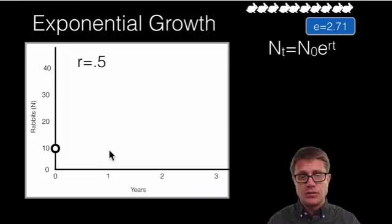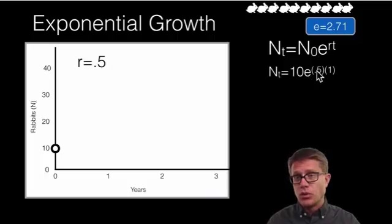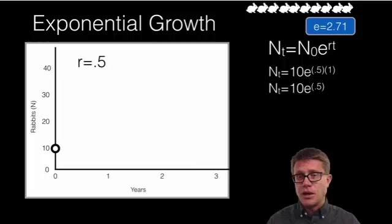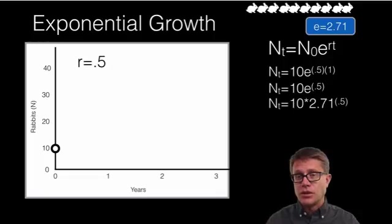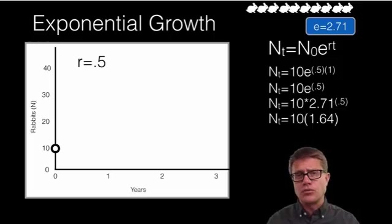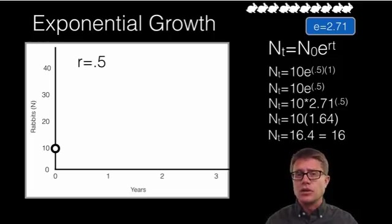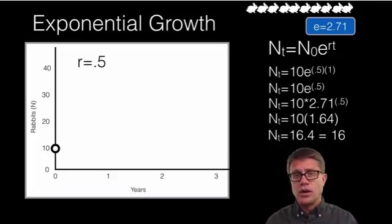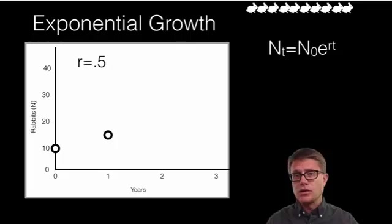Let's say we want to figure out what's going to happen to the population in year 1. We started at 10. We just use this equation: E is the same. Our R value will always be 0.5. Our T value is time. Our initial population is 10. So we're simply multiplying 1 times 0.5—one year times that growth rate. That's 10 times 2.71 raised to the 0.5 power, which is like taking the square root of 2.71, and that's 1.64. So that's around 16 rabbits after one year.